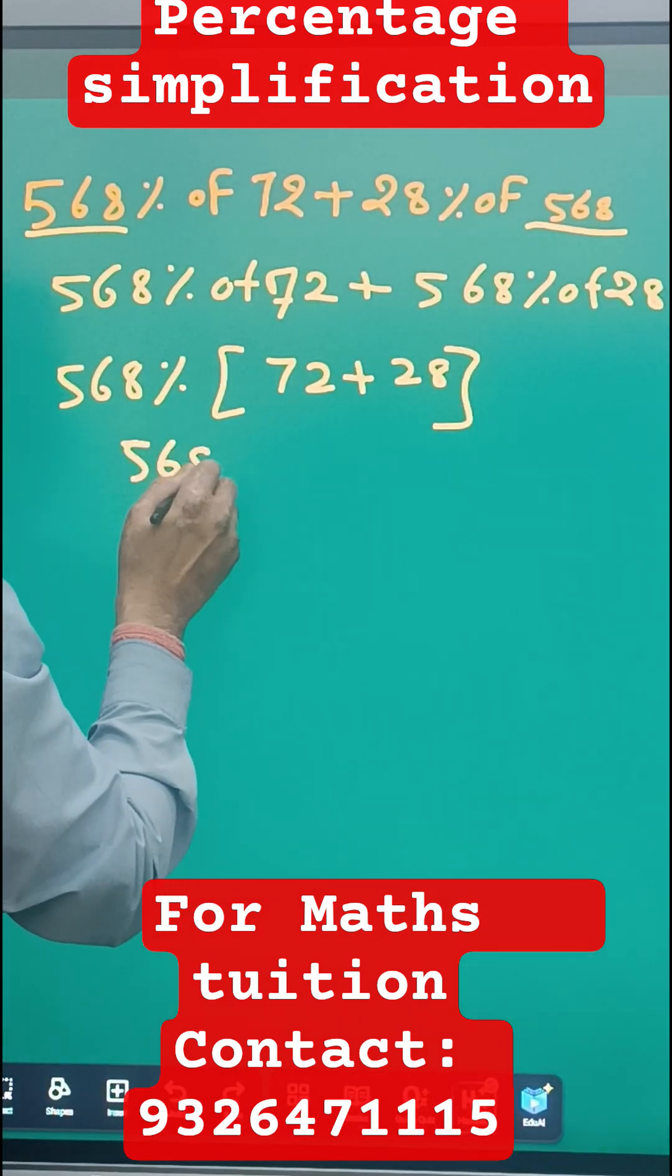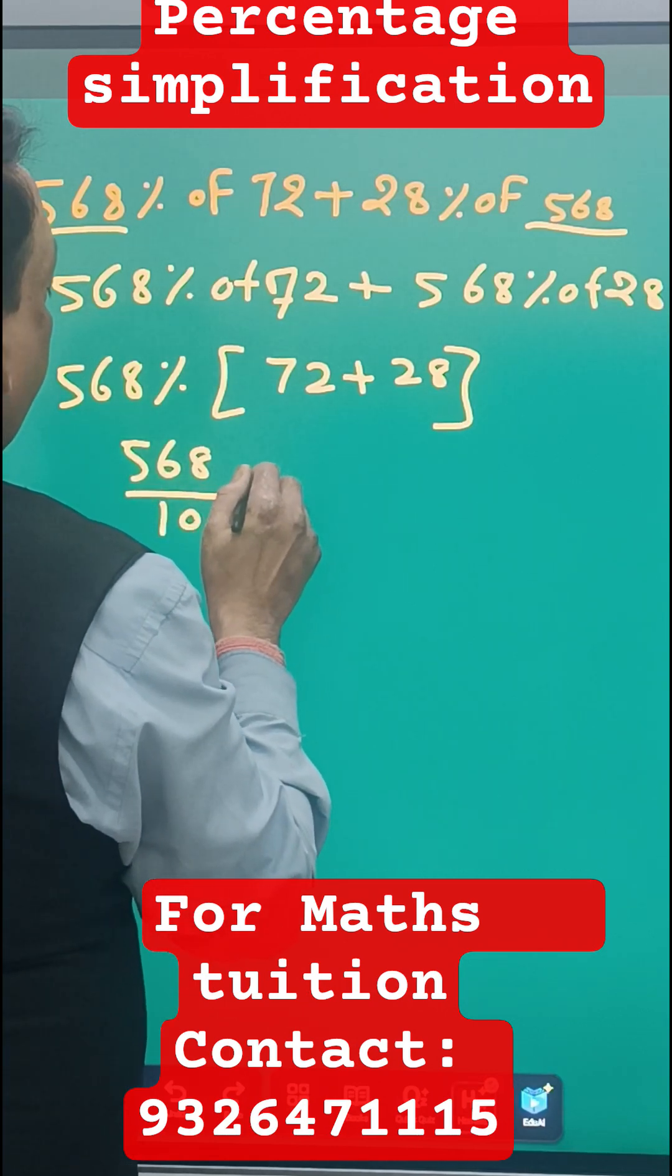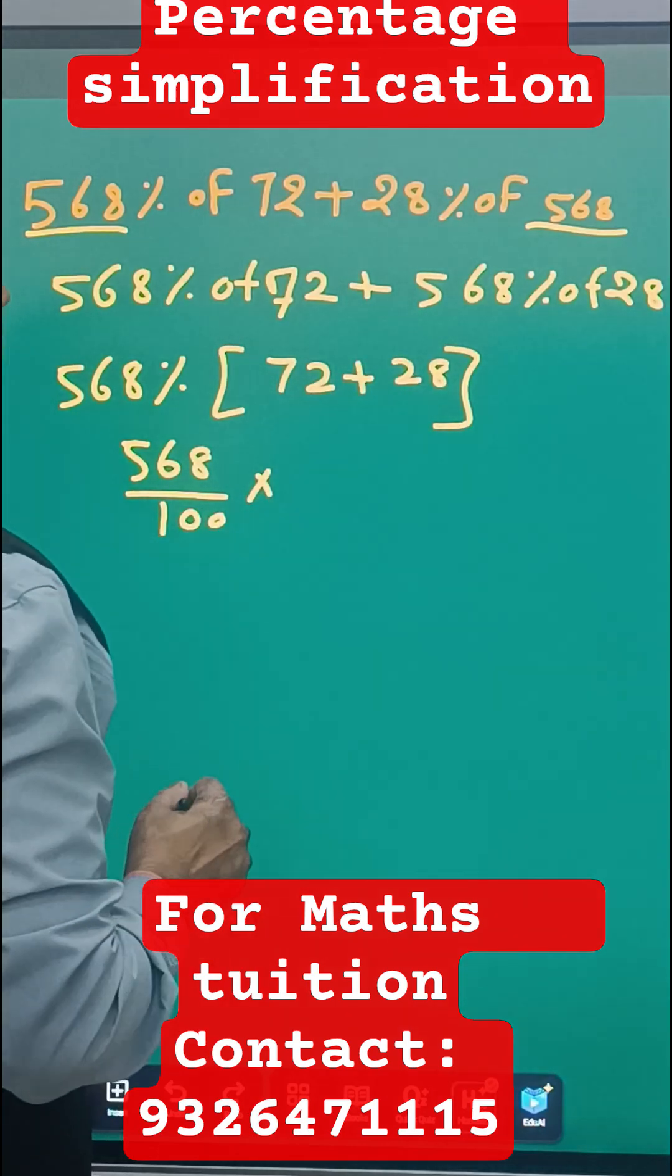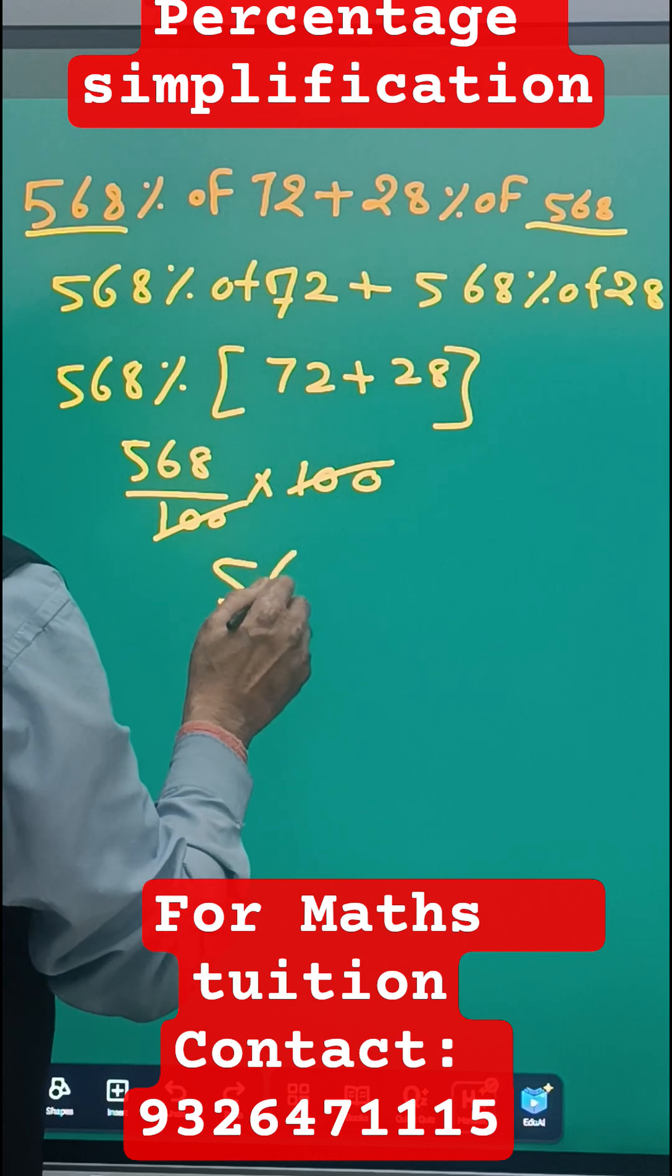So 568 upon 100, percentage means upon 100, and then if you add 72 plus 28 that becomes 100. So 100 and 100 cancel, so the answer is 568.